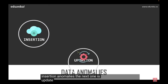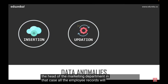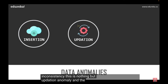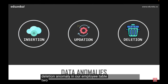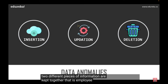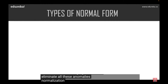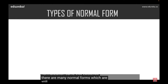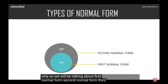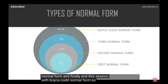An update anomaly occurs when, for example, an employee leaves the company — all employee records referencing that person would need to be updated, and missing even one leads to data inconsistency. A deletion anomaly occurs when two different pieces of information are stored together in the same table — employee information and department information, for example. If at the end of a financial year employee records are deleted, department information is lost too. To eliminate all these anomalies, normalization came into existence. The normal forms we'll cover are 1NF, 2NF, 3NF, and Boyce-Codd Normal Form (BCNF).